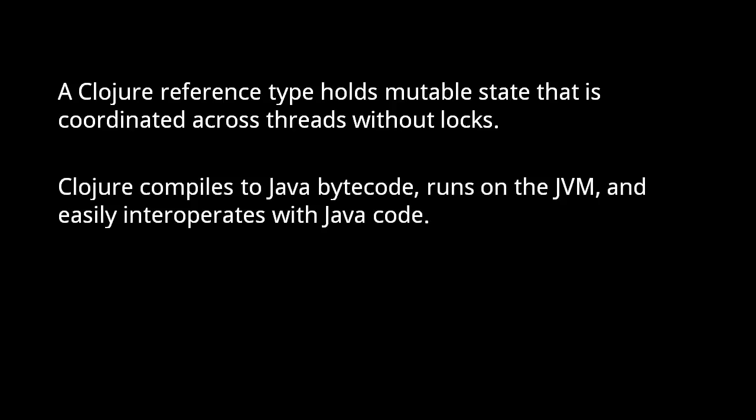Clojure is intimately connected to Java. Not only does Clojure compile to Java bytecode so as to run on the JVM, every Clojure data type is defined in terms of Java classes. Effectively, code in either language can invoke code of the other. Invoking Java code from Clojure is especially convenient because Clojure has special syntax for doing so. In fact, Clojure makes invoking Java so convenient that Clojure's standard library simply defers to the Java libraries for some core functionality. For example, reading and writing files in Clojure is done by simply using the existing Java file classes.